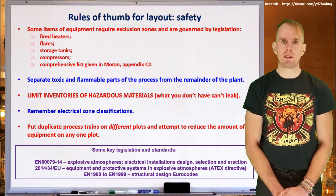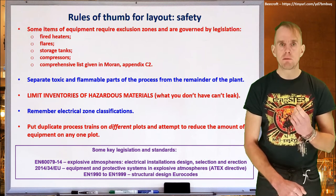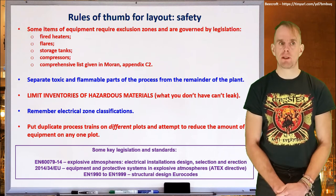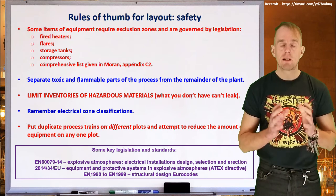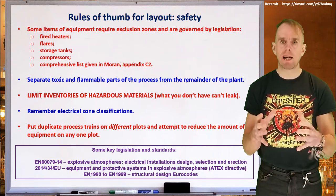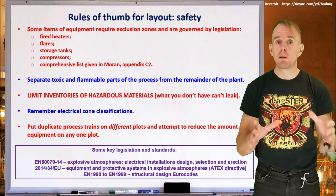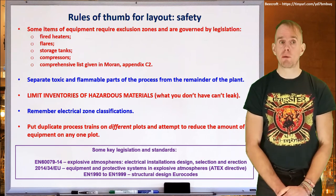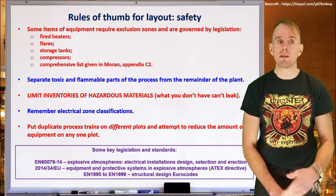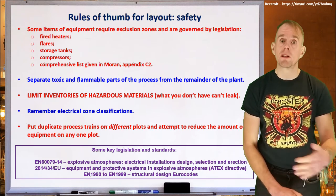You're going to have electrical items of equipment on your plant, but if you've also got flammable atmospheres present, or the potential for flammable atmospheres, then there are going to be specific types of electrical equipment that can and cannot be used, all governed by your electrical zoning classifications. Sometimes your design will have duplicate parts of equipment — for example, you may decide it's simply too unsafe to build one big reactor with all its associated equipment, so you have two parallel reaction trains. Consider putting them on different plots to reduce the items of equipment on any one plot. Key legislation and standards governing these considerations are referenced on the slide.